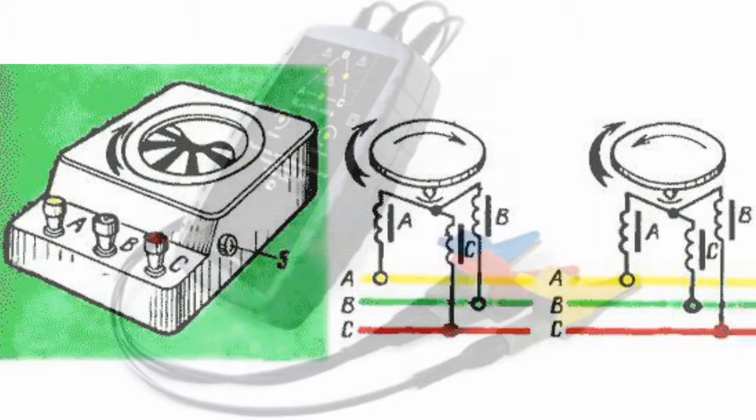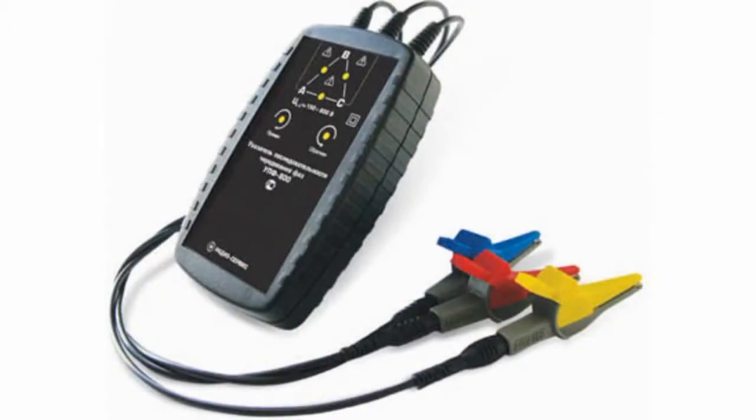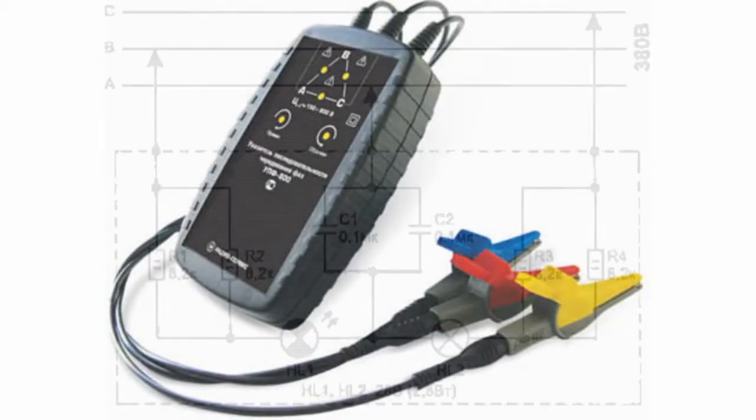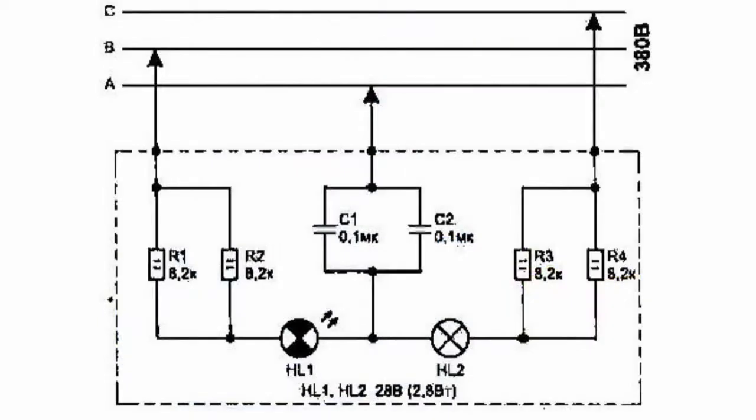The phase indicator of the signal lamps is a more complicated version of the device. Its operation principle is based on the complex resistance values of the capacitors through which the signal neon tubes are connected.